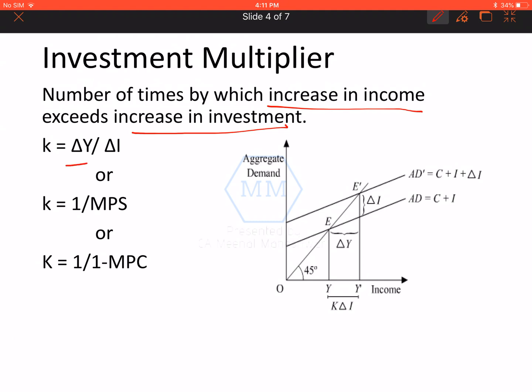Formula-wise, the formula is k = ΔY/ΔI. Investment multiplier's symbol is k (small k). ΔY means change in income and ΔI means change in investment. Change in income divided by change in investment gives you investment multiplier. The second formula is k = 1/MPS. MPS we have already studied, that is marginal propensity to save. The third formula - since we can also write MPS as 1 minus MPC, my third formula becomes k = 1/(1-MPC). So always remember: ΔY and ΔI.